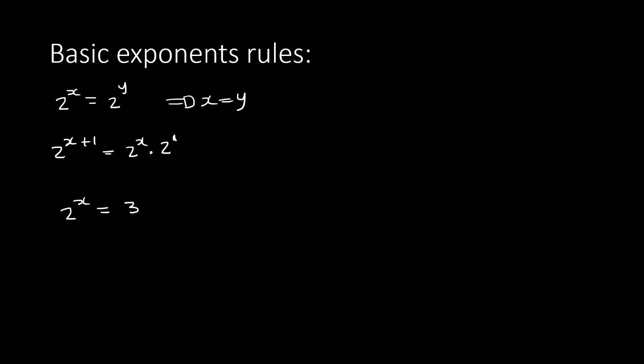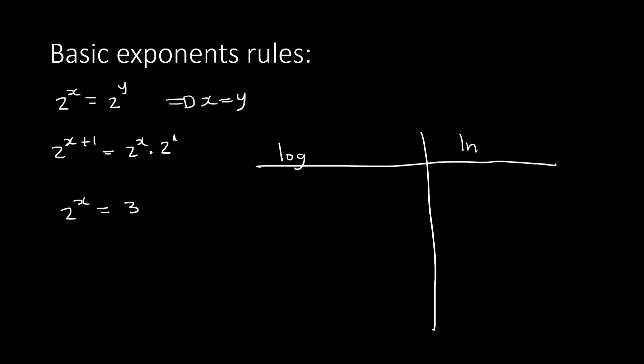Some people use ln, some people use log — I'll show both. With log, the base tool is the base. We're looking for x, so x is the answer. If you say it aloud, it's 'base 2, exponent x equals 3,' meaning log base 2 of 3 equals x, so 3 goes inside and 2 is the base.